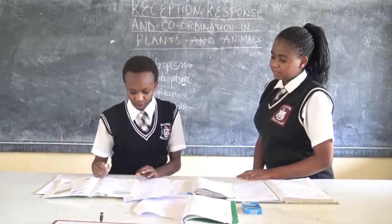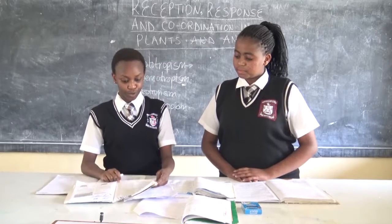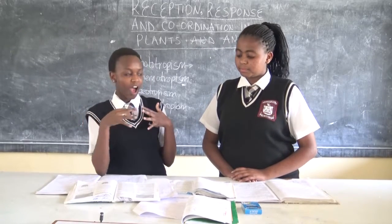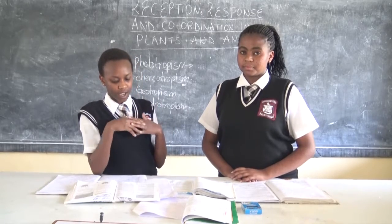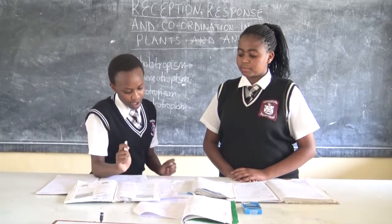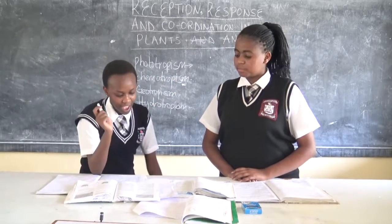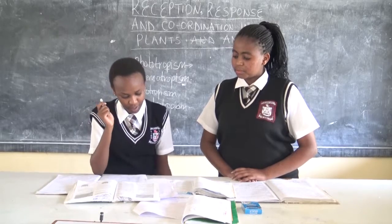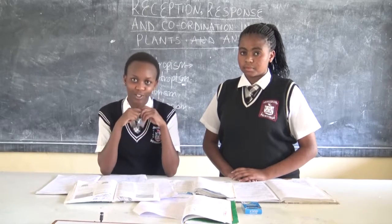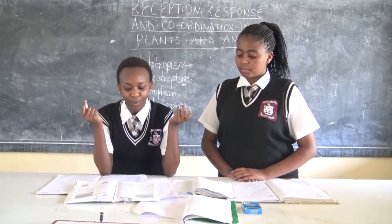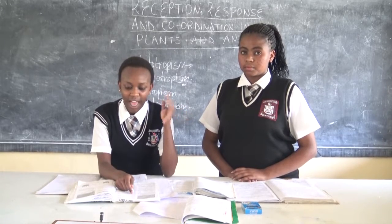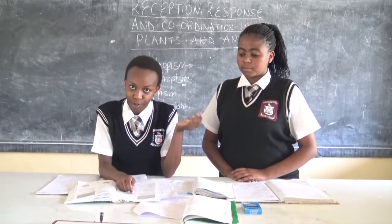Phototropism is the growth curvature in response to the direction and intensity of light. Shoots are positively phototropic while roots are negatively phototropic. Chemotropism is the growth curvature in response to a gradient of chemical concentration. An example is shown by a developing pollen tube which grows towards chemicals secreted by the embryo sac.